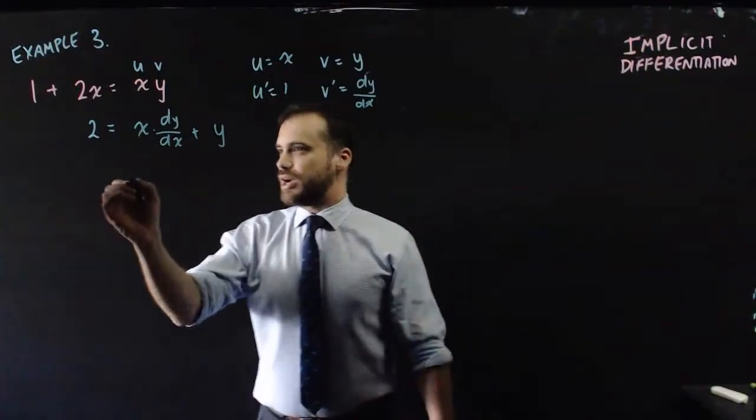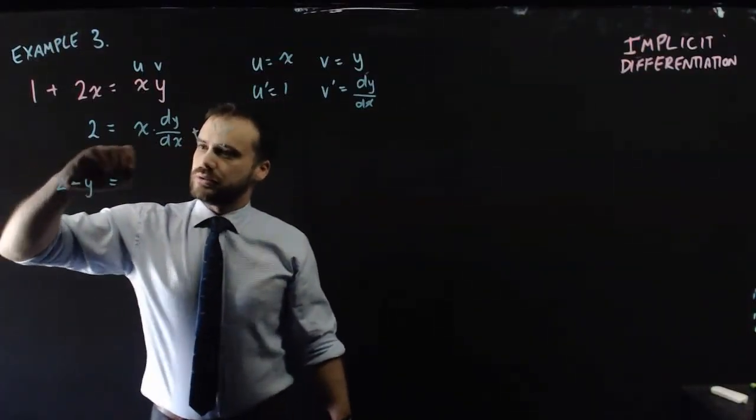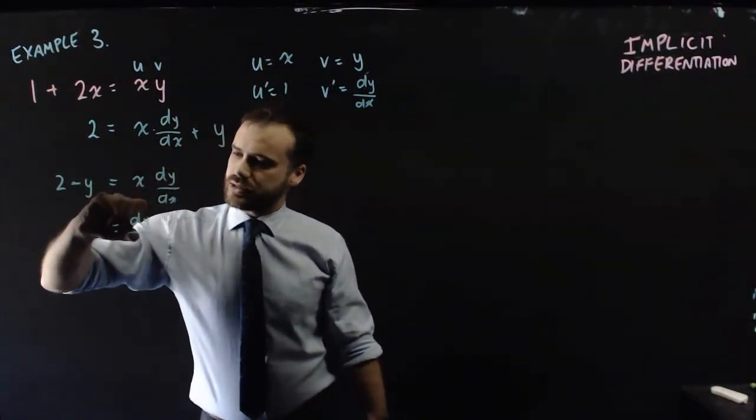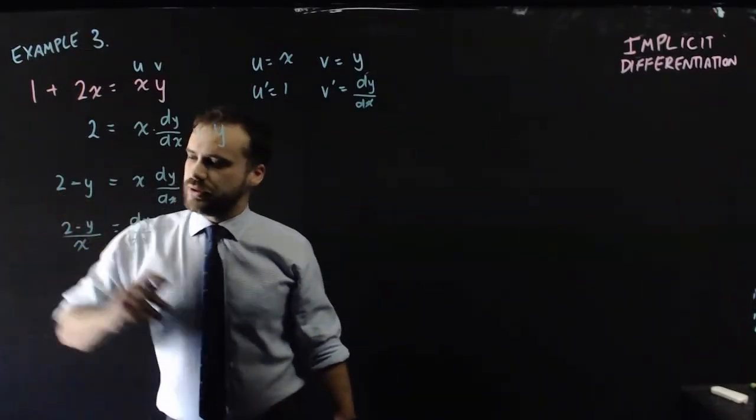And then I just rearrange this. So it's going to be 2 minus y equals x dy/dx.